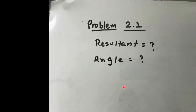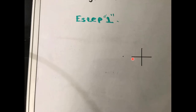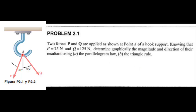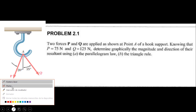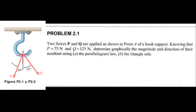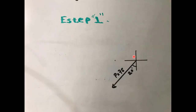The problem questions are: what is the resultant and what is the angle? For step one, we draw the Cartesian axis. I use a technique I call 'head and tail.' I take the first force P — it's important to start with one force. The force P has 75 newtons, and you can imagine the Cartesian axis here. When I go with the exercise I place force P in the Cartesian axis in the same position.